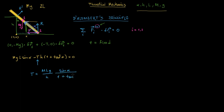Since delta-alpha is different from zero, all of this must equal zero. We can isolate T from this equation and obtain T = MLg·sin(alpha)·cos²(alpha) / H. If you want to express tangent in terms of sine and cosine, another way to write this equation is T = (MLg/H)·sin(alpha)·cos²(alpha).